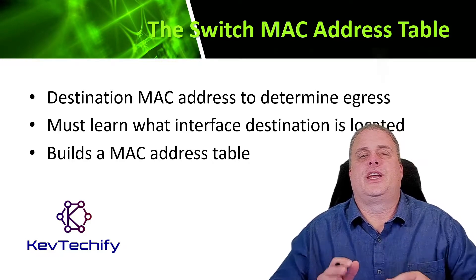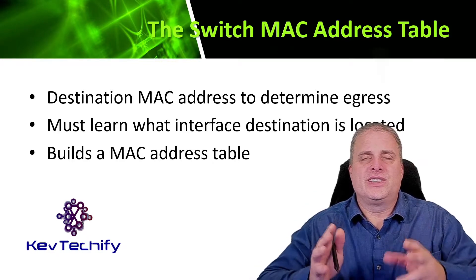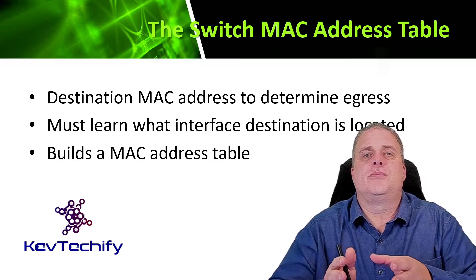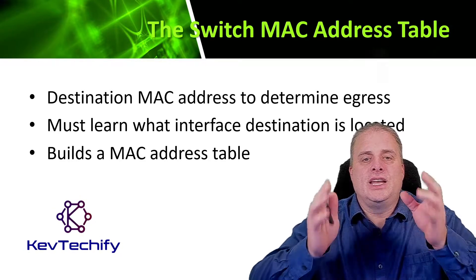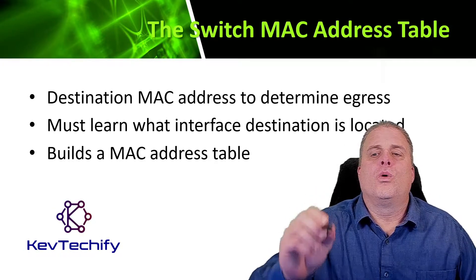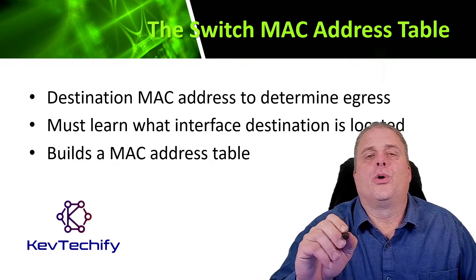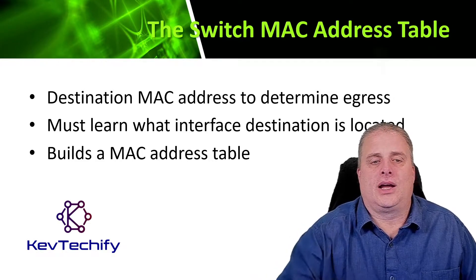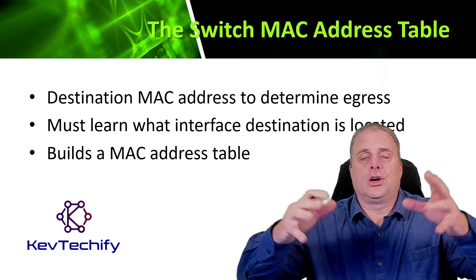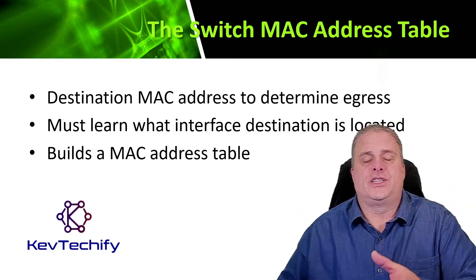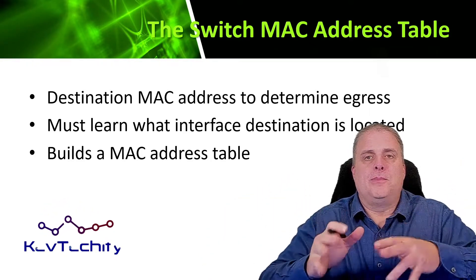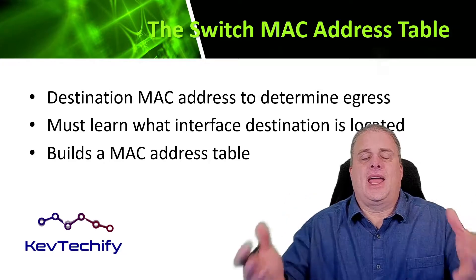The switch MAC address table uses the destination MAC address. In the frame there's a destination MAC address, and it uses that to determine what egress port it's going to go out on. The switch has to learn what interfaces are connected on what ports and where they're located — it builds this MAC address table.